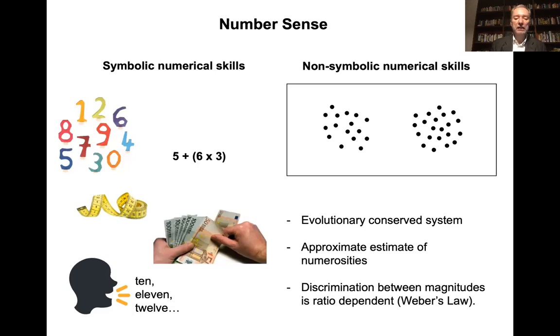Discrimination between magnitudes in the approximate number system would be ratio-dependent. In other terms, it obeys Weber law.